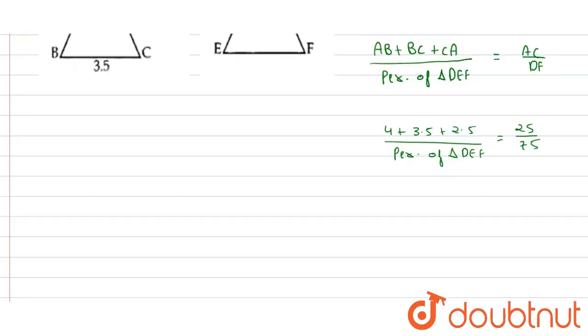By simplifying this, we get 10 upon perimeter of triangle DEF is equal to 1 upon 3. By further solving this, we get perimeter of triangle DEF is equal to 30 cm, which is our answer.